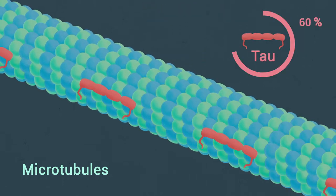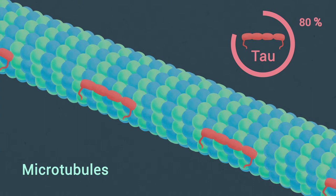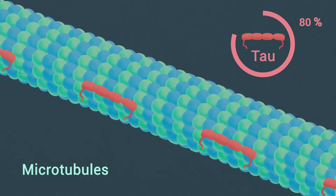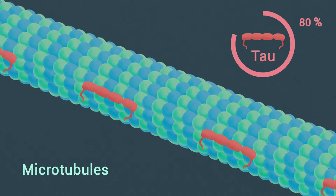Tau constitutes over 80 percent of neuronal MAPs, stabilizes and bundles axonal microtubules, and is developmentally regulated.